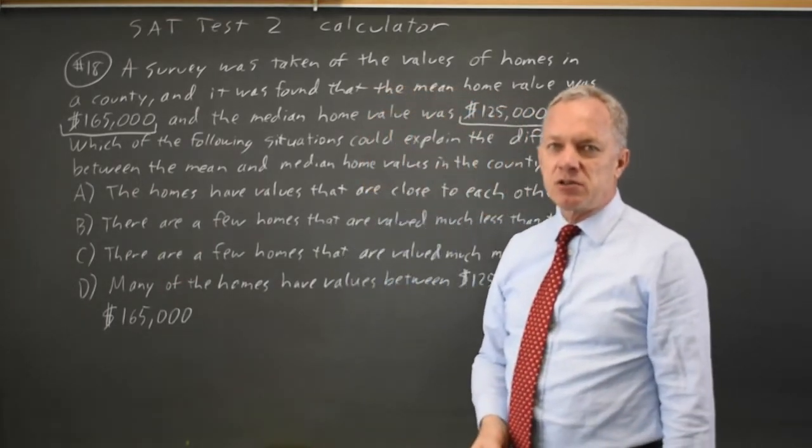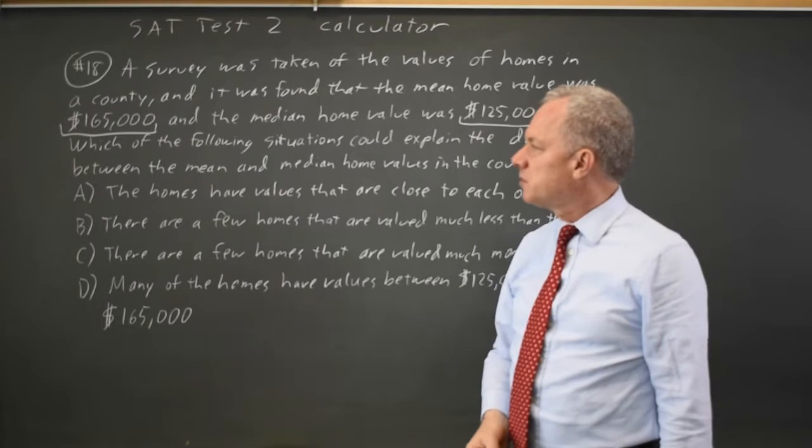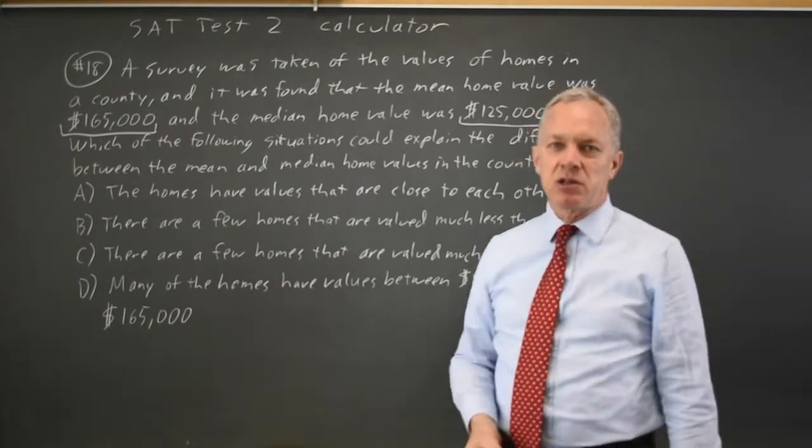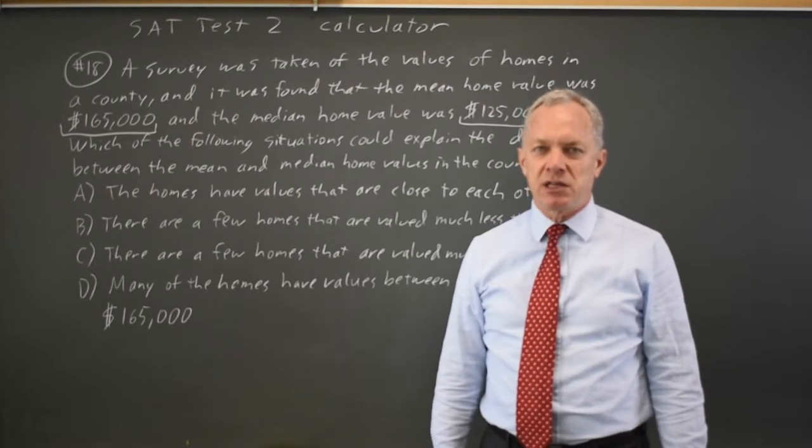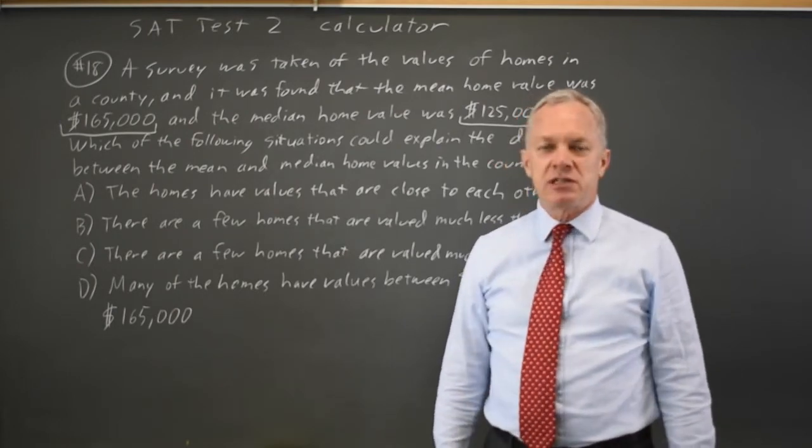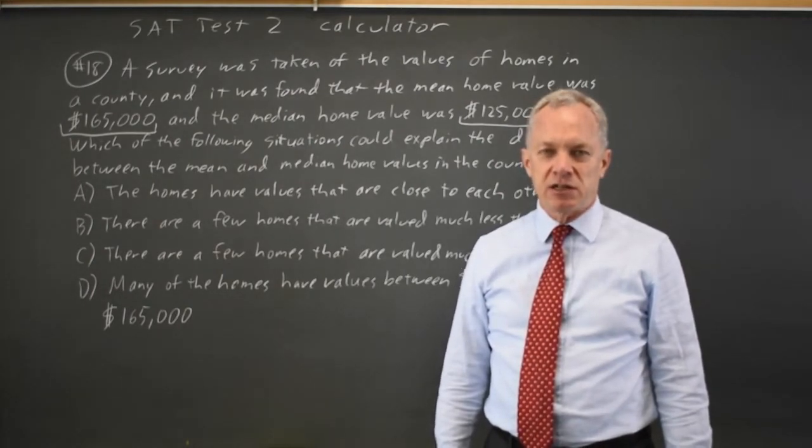Unusually high values will pull the mean up relative to the median. If in contrast, the mean is lower than the median, then the distribution is either skewed low or has unusually low outliers.